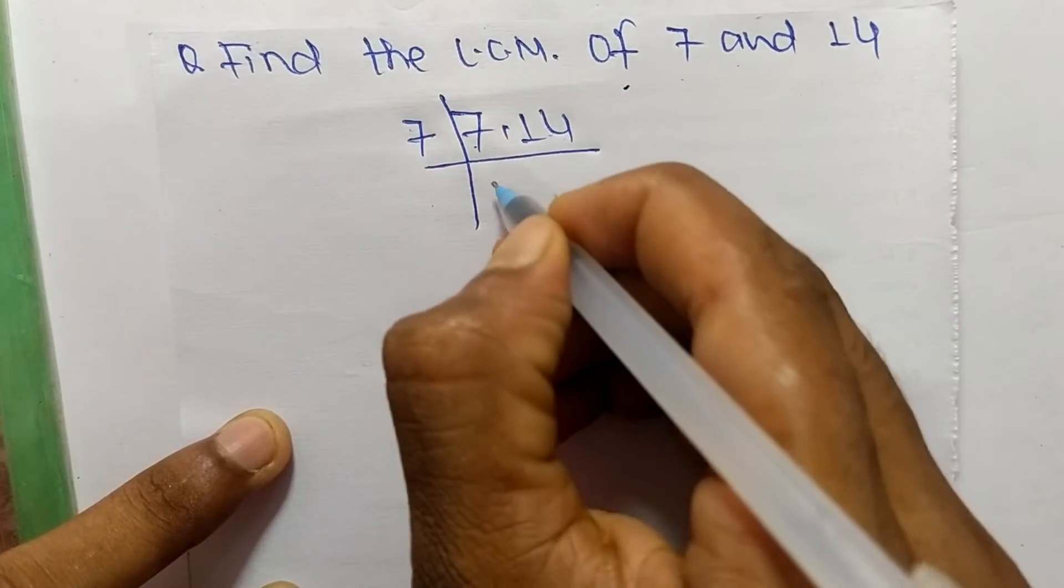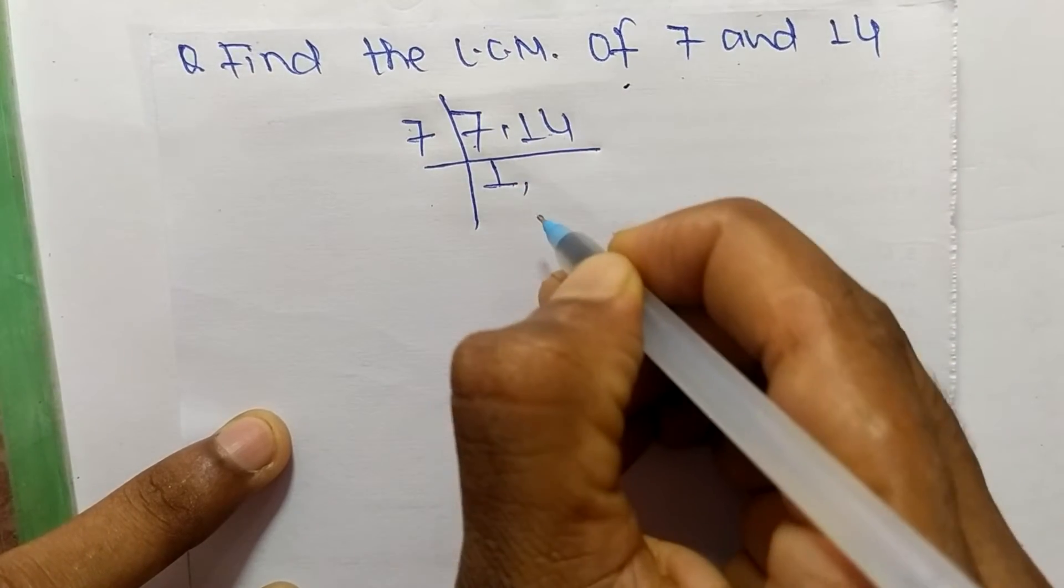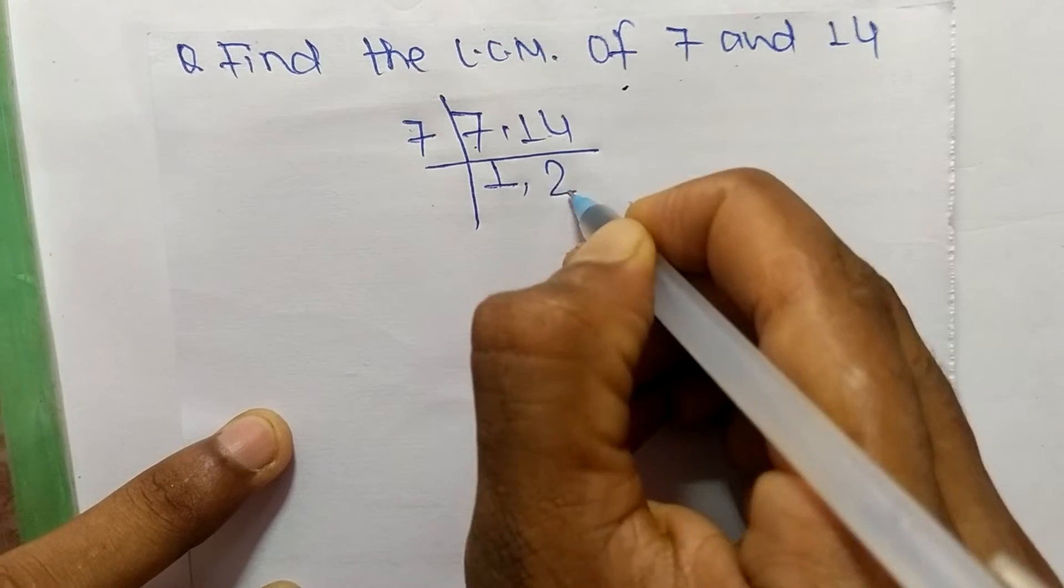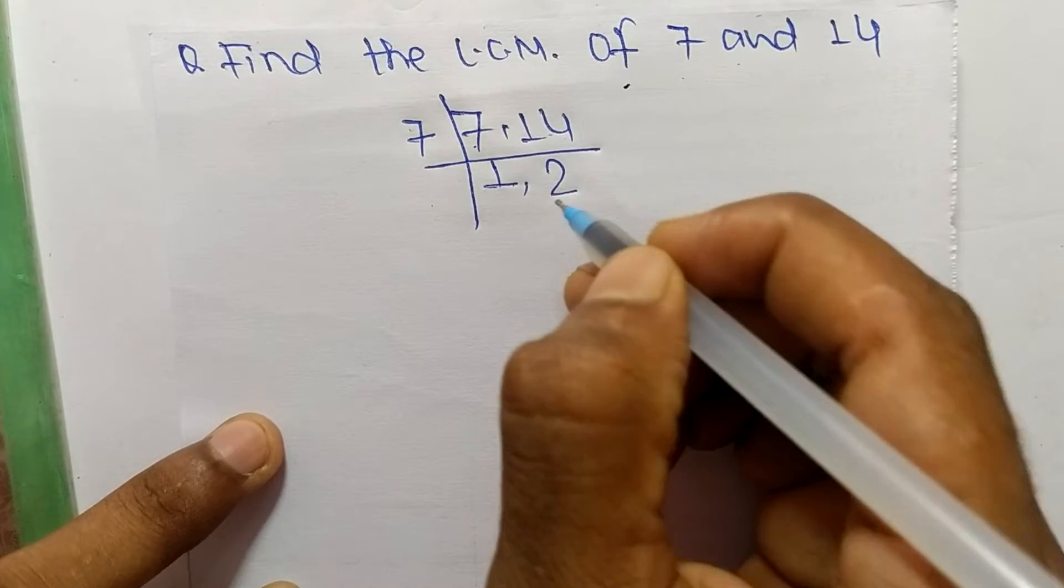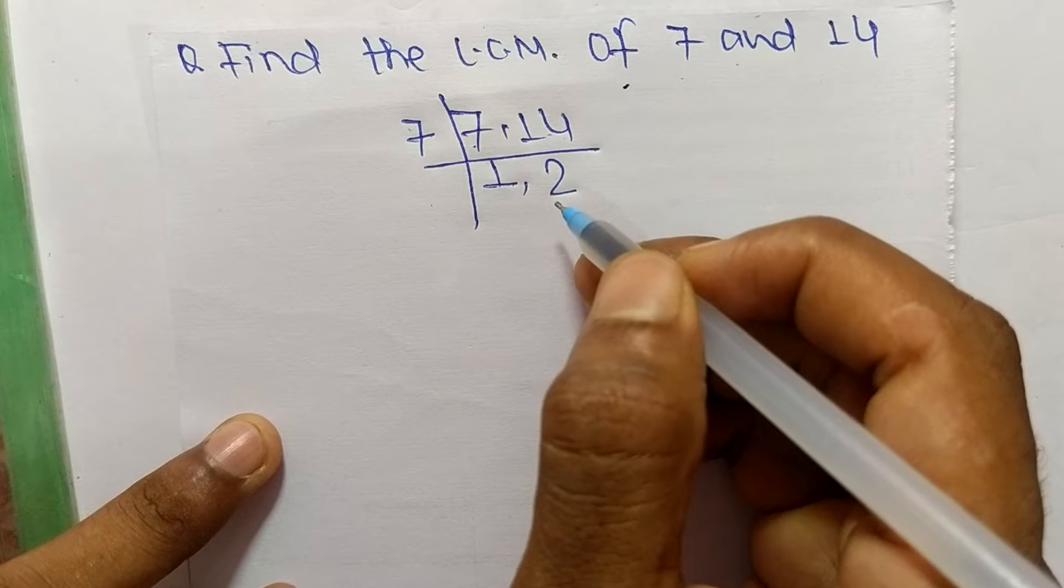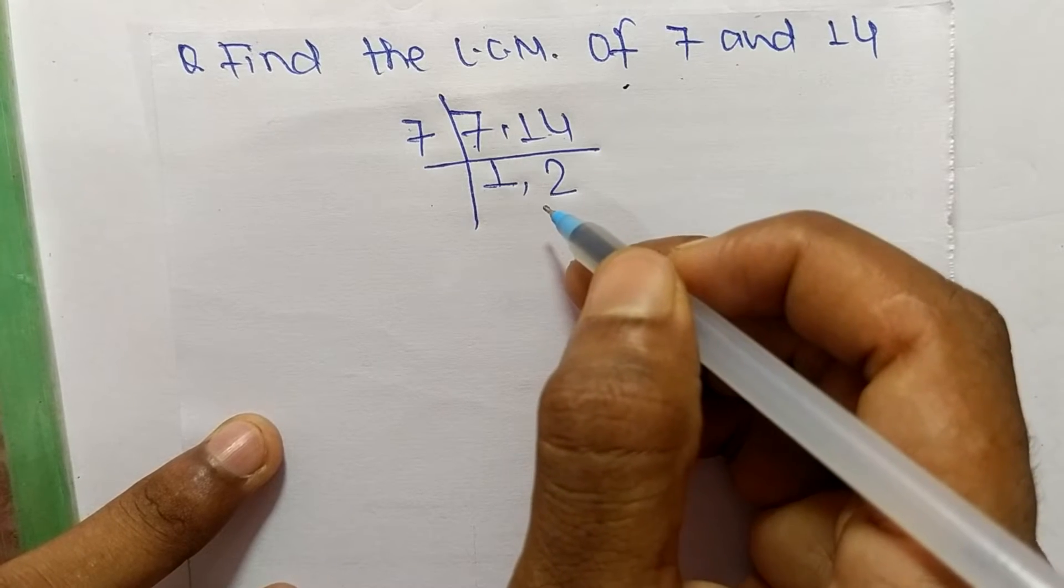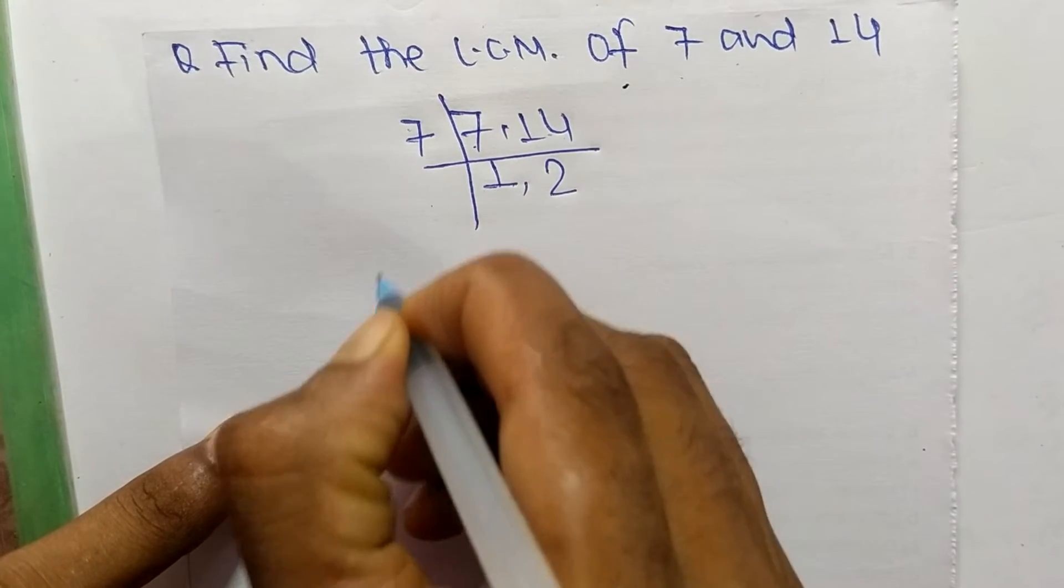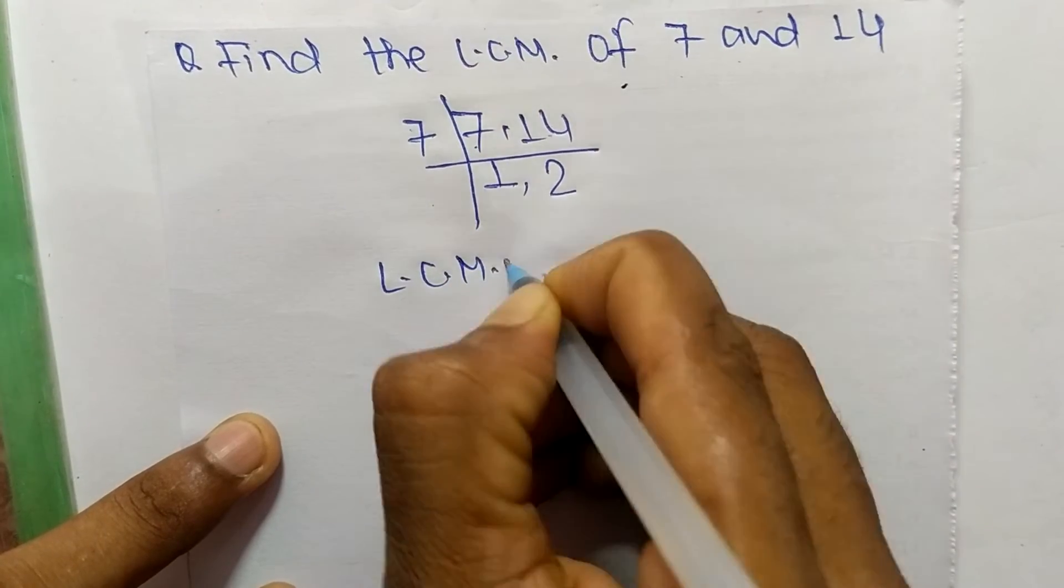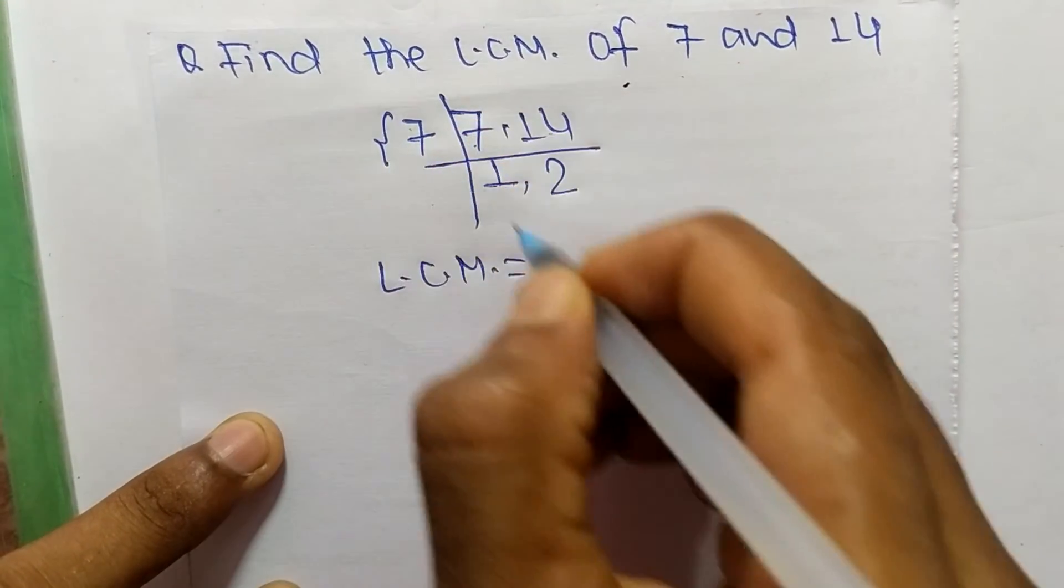7 times 1 means 7, and 7 times 2 means 14. So now we get here 1 and 2, which are not exactly divisible by the same number. So its LCM is equal to, from this part it is 7.